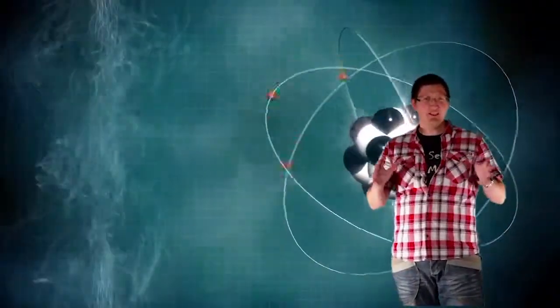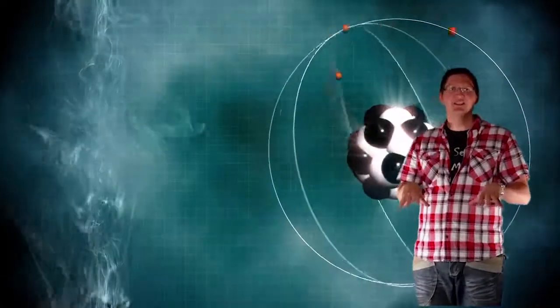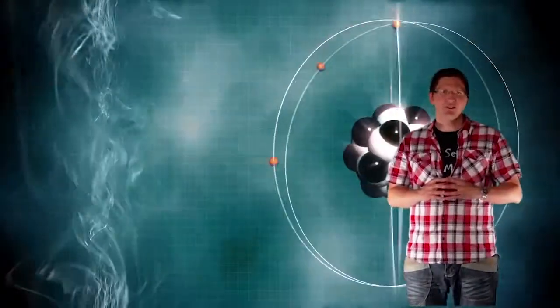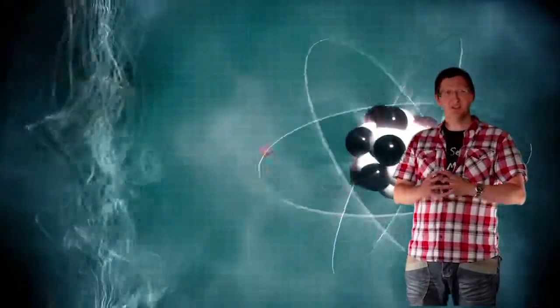So all the elements that we see on our planet today came from a big star. Originally if you trace it back to the Big Bang from hydrogen. Hydrogen being the building block of all the elements in the periodic table.